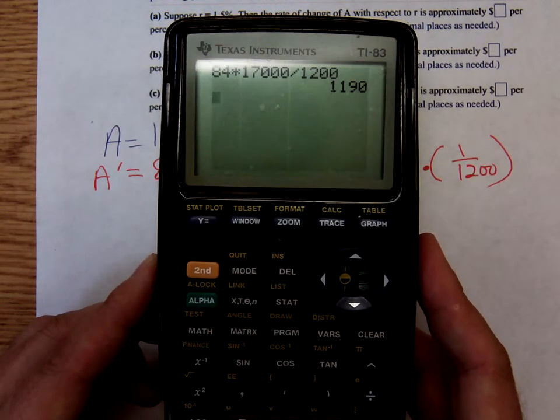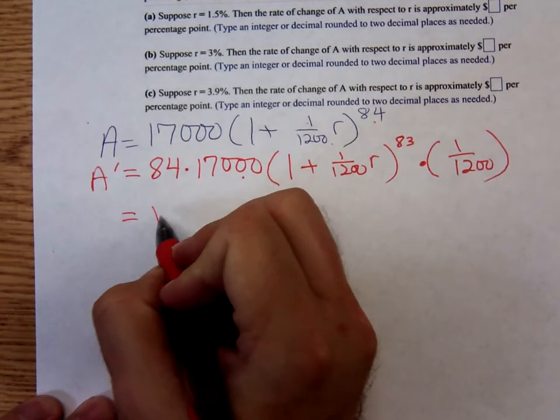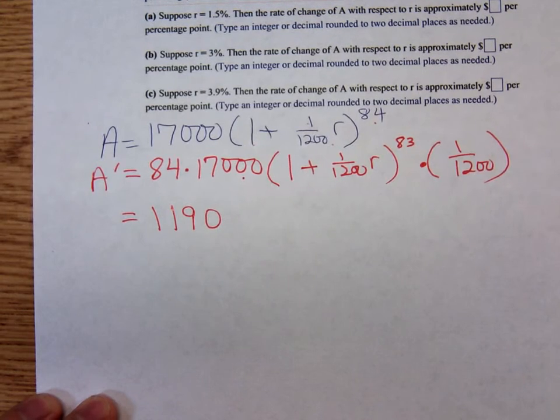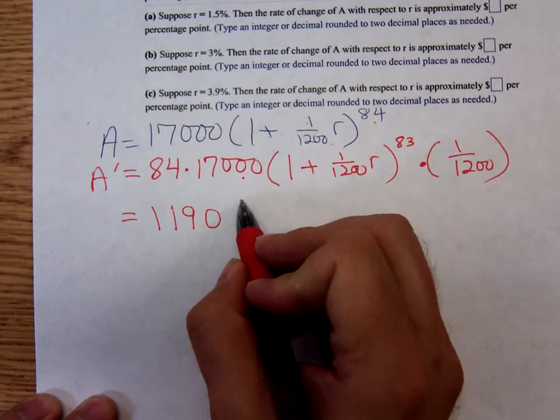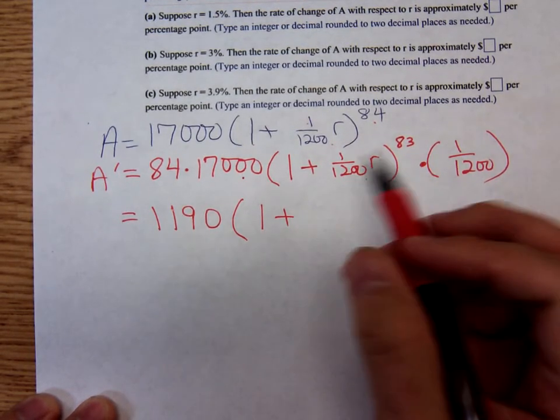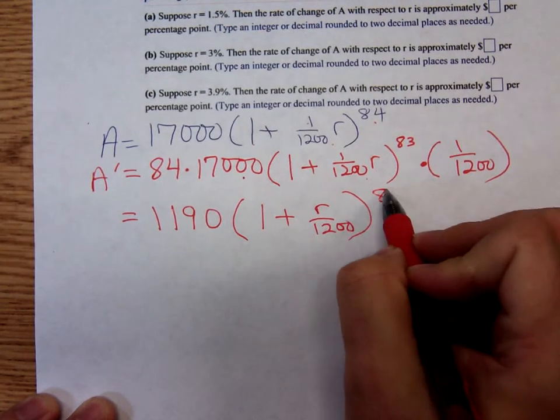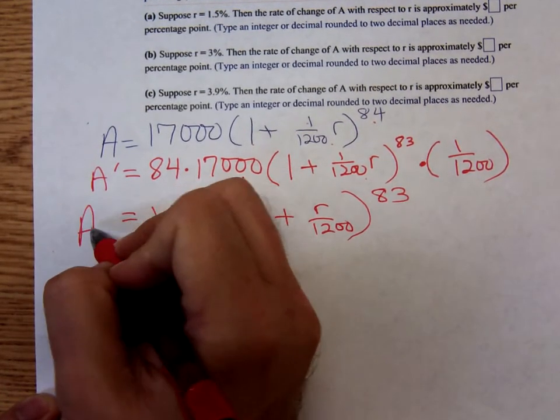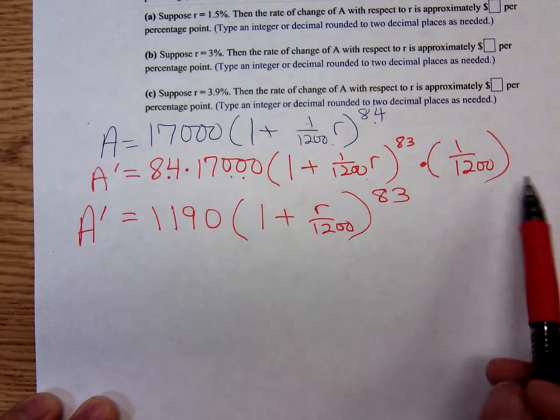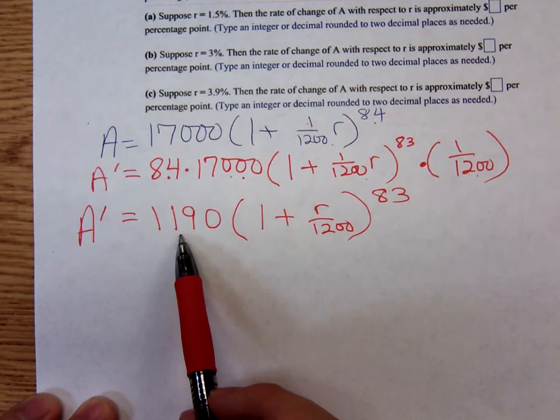Eighty-four times seventeen thousand divided by twelve hundred. I'm getting one thousand one hundred ninety. And we still have the one plus r over twelve hundred to the eighty-three power. So there's our rate of change formula. I took eighty-four times seventeen thousand, divided it by twelve hundred, that gave me the one thousand one hundred ninety.